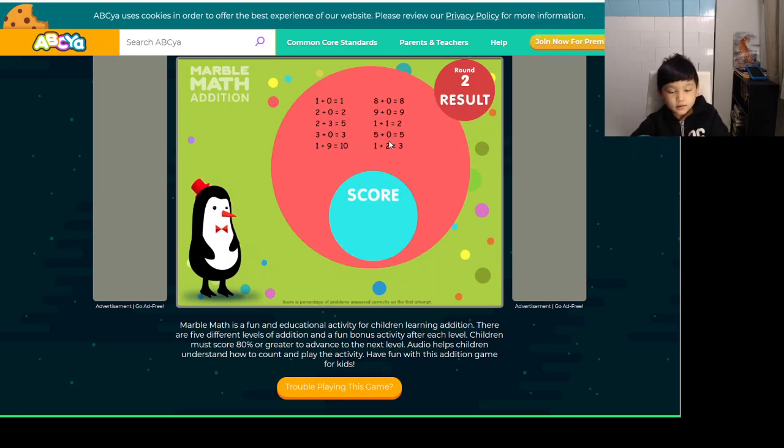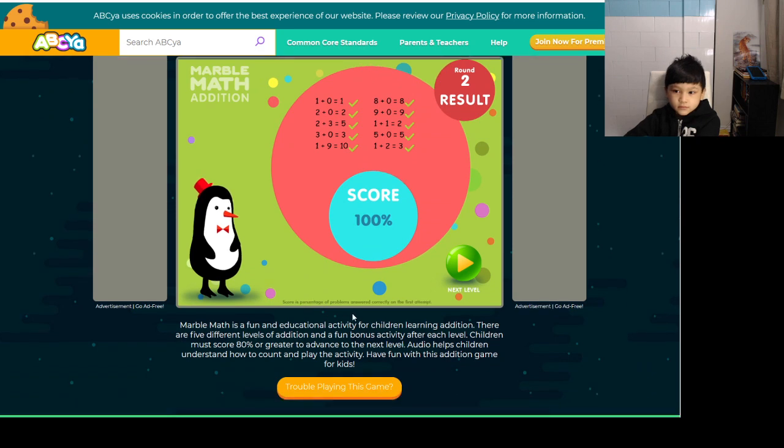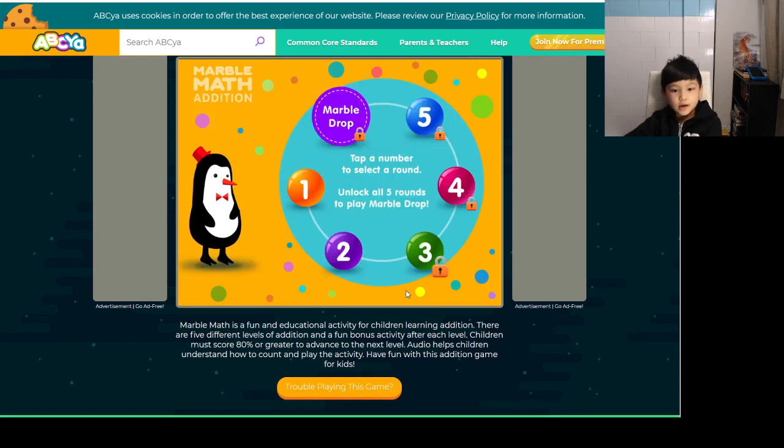Let's see round 3 results. Yeah, all of these were also correct, guys. Well guys, that's good. Okay, let's go around. We're going to level 3. I wonder what this marble drop is.